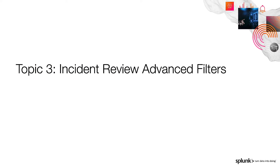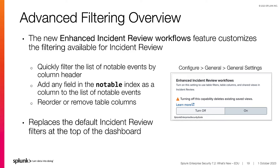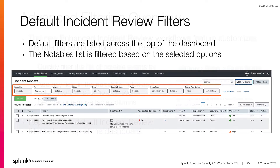Next, we will review the advanced incident review filters available with ES 7.2. ES 7.2 has a new feature called Enhanced Incident Review Workflows, available under General Settings. Enabling this feature disables the default incident review filters and moves the filtering to the column headers of the Notables list. This new filtering allows you to quickly filter the list of notable events by the various column headers. You can add any field in the notable index as a column header in the table, and customize the table by reordering or removing columns. The default view of the incident review has filters across the top of the dashboard, and the list of notables changes depending on which filters are chosen. With ES 7.2, you can continue to use these filters or turn on the Advanced Filters.